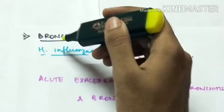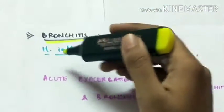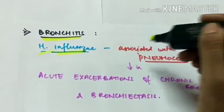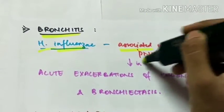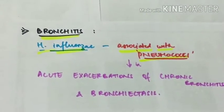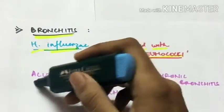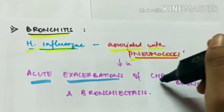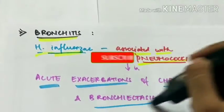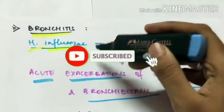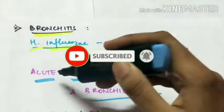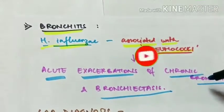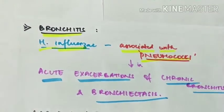The fifth and the last is bronchitis. The Haemophilus influenzae is associated with pneumococci and they cause acute exacerbation of chronic bronchitis and bronchiectasis. So Haemophilus influenzae is also responsible for acute exacerbations of chronic bronchitis and bronchiectasis.